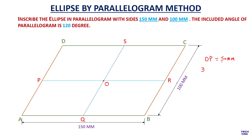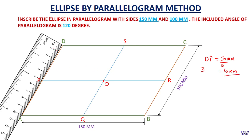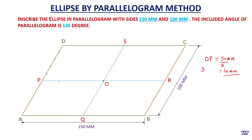In this case I am going to take five divisions, so 50 divided by 5 gives 10 mm distance. With the help of a scale I will divide this line into five equal divisions of 10 mm each. In the same way I will divide my OP line into five equal divisions. OP is 75 mm, so each division will be 15 mm.